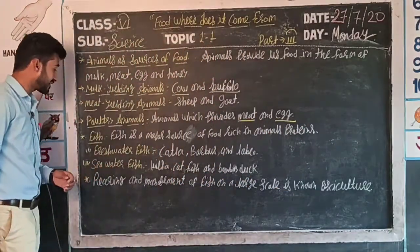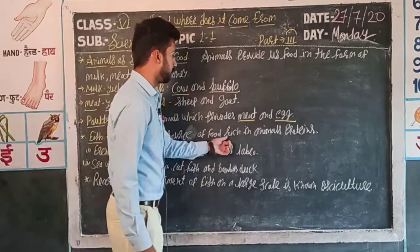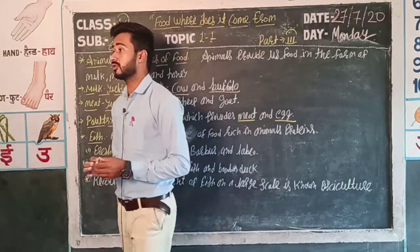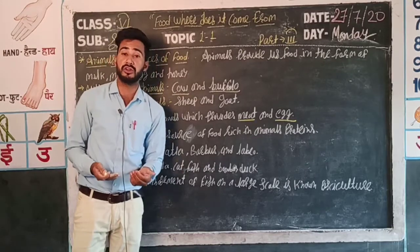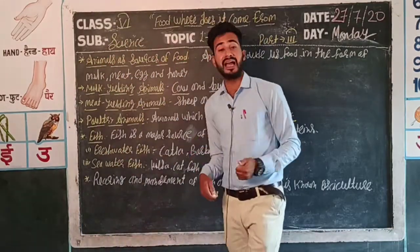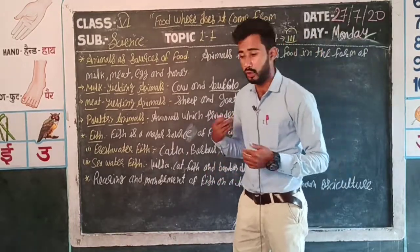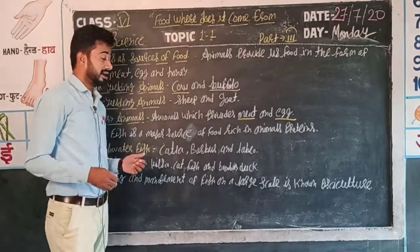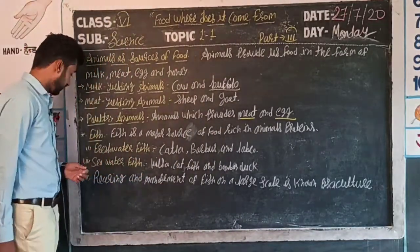Next, our topic is fish. Fish is a major source of rich animal proteins, which easily helps us digest and supports our body. Protein is the main component of food. Clear students.